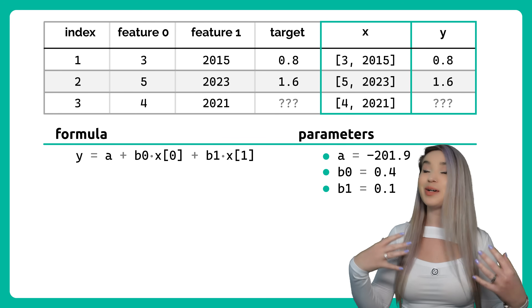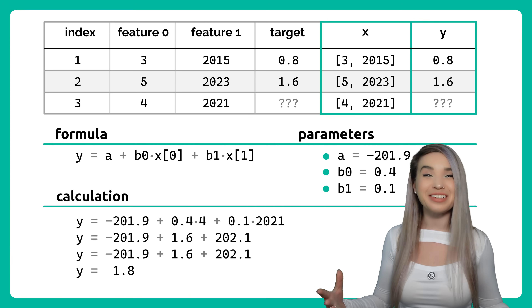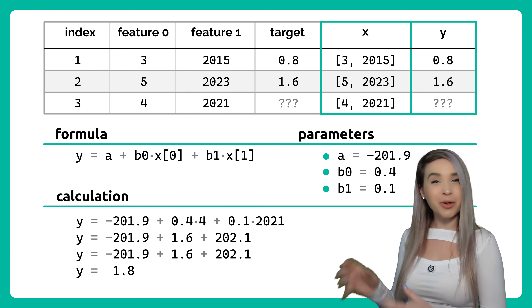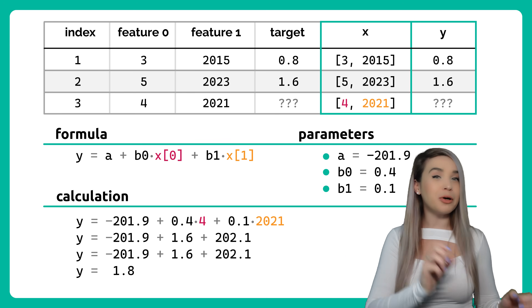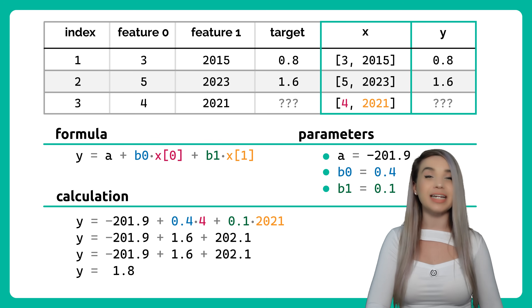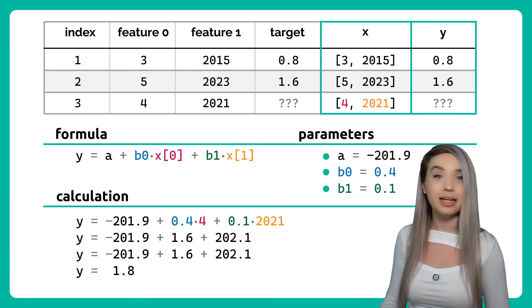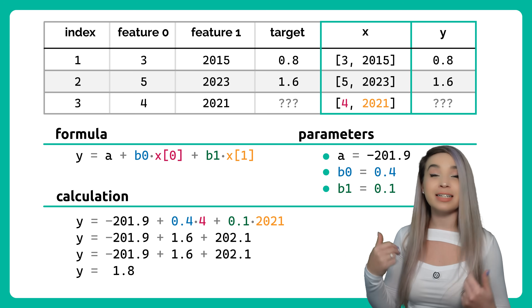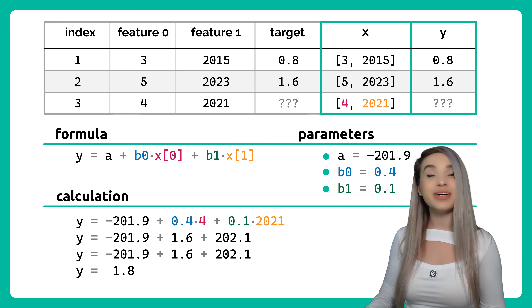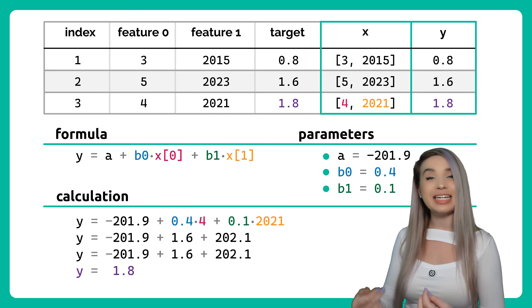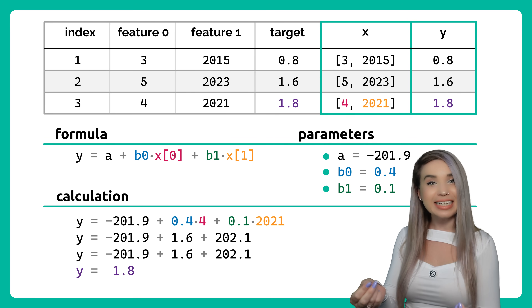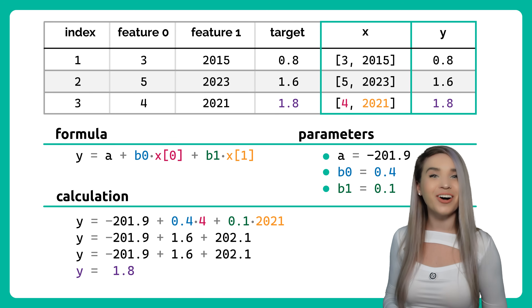So, once again, we account for both features and both slopes in our linear regression formula, which gives us the value of 1.8 million Canadian dollars.